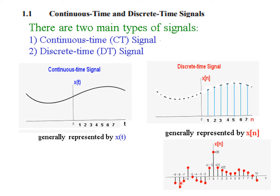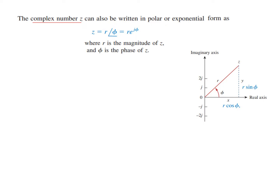Now let's recall what we have learned about complex numbers. A complex number z can be written in polar form or exponential form. In polar form, the signal has magnitude R and angle Phi with the x-axis. This can also be written in exponential form as R times e raised to the power j·Phi, where R is the magnitude of z and Phi is the phase angle.